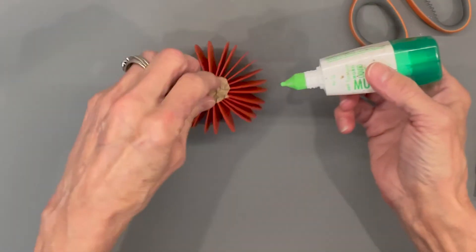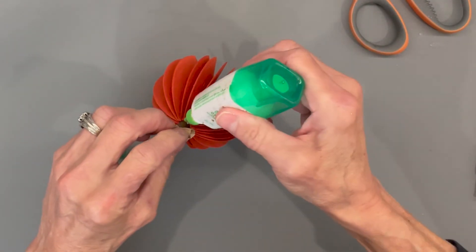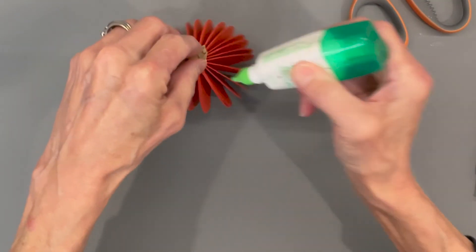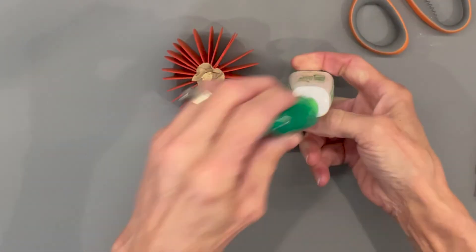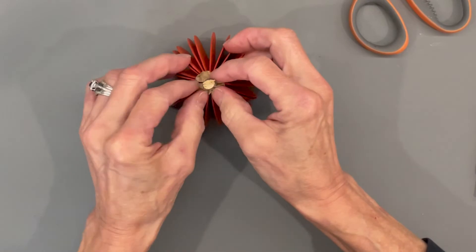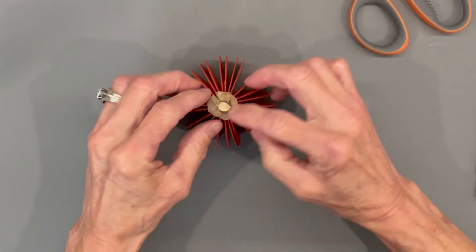Once you get your glue underneath there, it's going to be a lot easier to put together. Just kind of flatten it on there and squeeze it up at the same time. Just want to make it look kind of wrinkly looking.